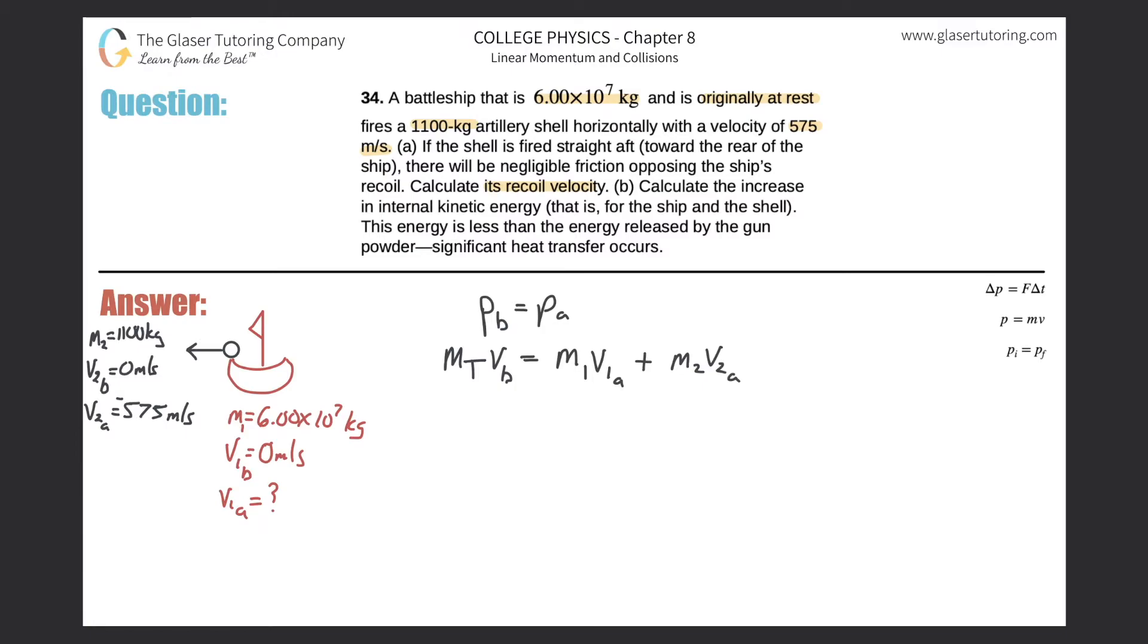So all we have to do now is plug in the numbers, but actually let me solve for this already. Let's simplify some things. What's the velocity before the firing of the artillery shell? Well, both objects are moving with zero velocity. So this whole velocity is zero, and this whole term drops out. So basically, now I can simplify this to be zero equals M1 V1A plus M2 V2A. And what are we looking for? We're looking for the recoil velocity of the ship. I'm looking for V1A.